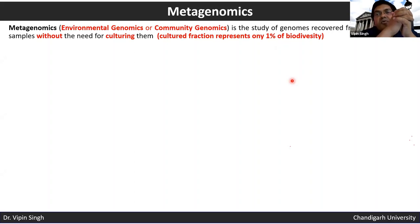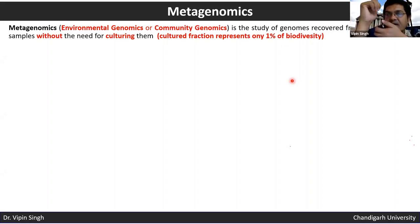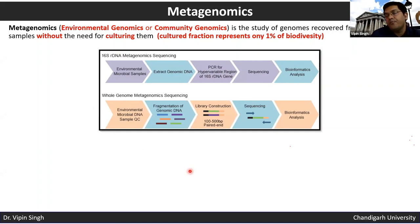The problem with culture-based approaches is that a lot of biodiversity is lost under lab conditions. With NGS you can directly take the environmental sample, extract genomic DNA, do a PCR of the hypervariable region sequence, and perform bioinformatic analysis. Or you can do whole-genome metagenome sequencing — directly sequence the entire community genome and match it to databases.